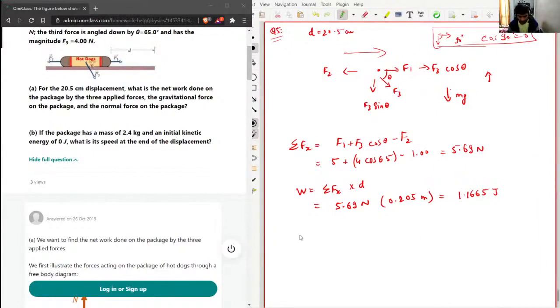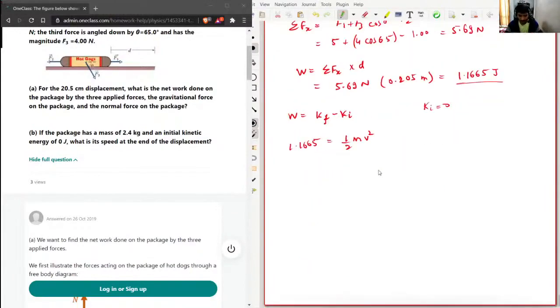So work done is nothing but change in kinetic energy. And K1 is given as zero. I can just write Ki minus Kf minus Ki, this is final kinetic energy minus initial kinetic energy. So Ki is given as zero, as zero. So I'll just write work done, we have already calculated which is 1.1665. Kinetic energy will be half m v square, m is given which is 2.4.